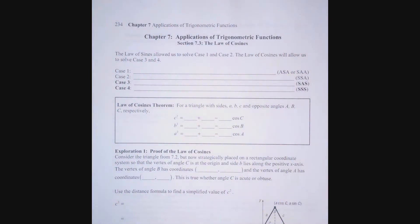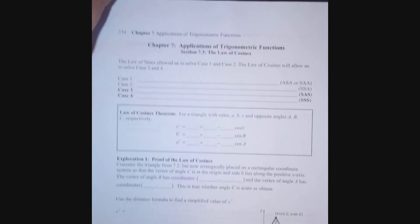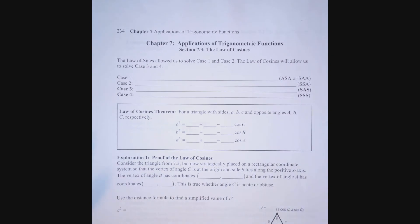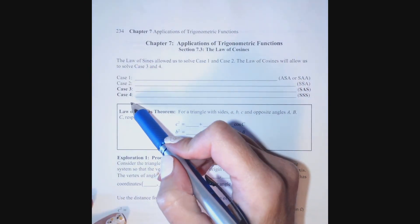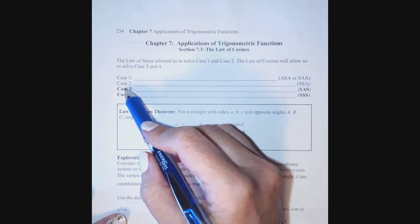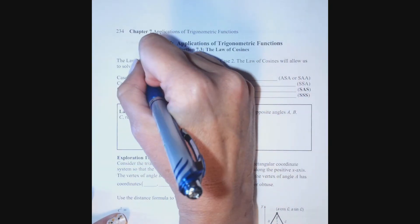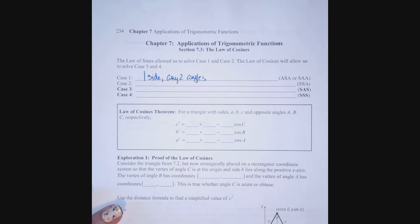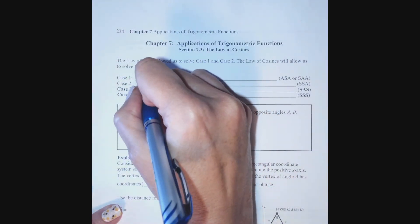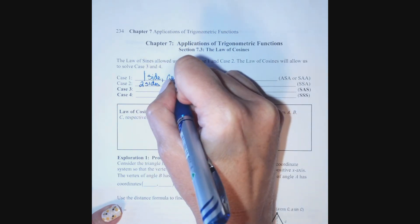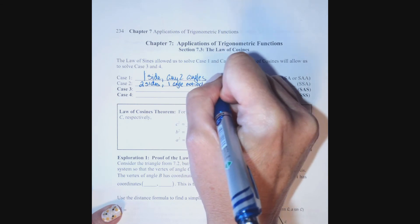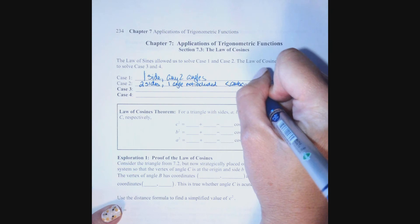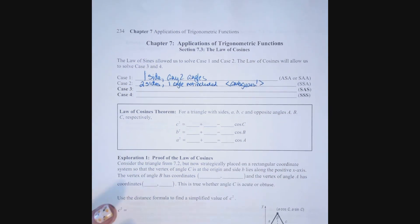In chapter 7 section 3 we continue our study of oblique triangles. In section 2 we identified the Law of Sines, saw how to derive it, and applied it to our first two cases. Let's list our four possible cases again. Case 1 is when we know two angles and one side — we use Law of Sines. Case 2 is our ambiguous case: two sides and an angle not included. We have to remember to check for that second triangle.